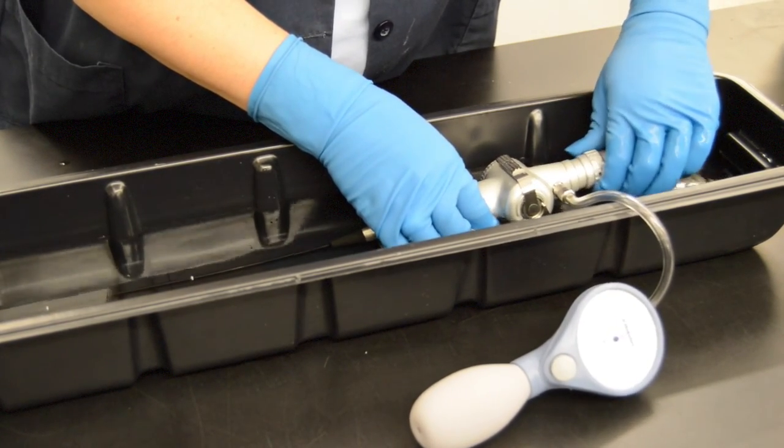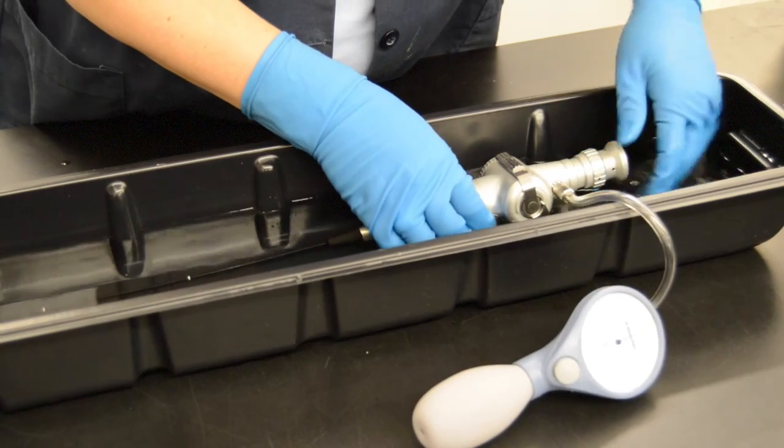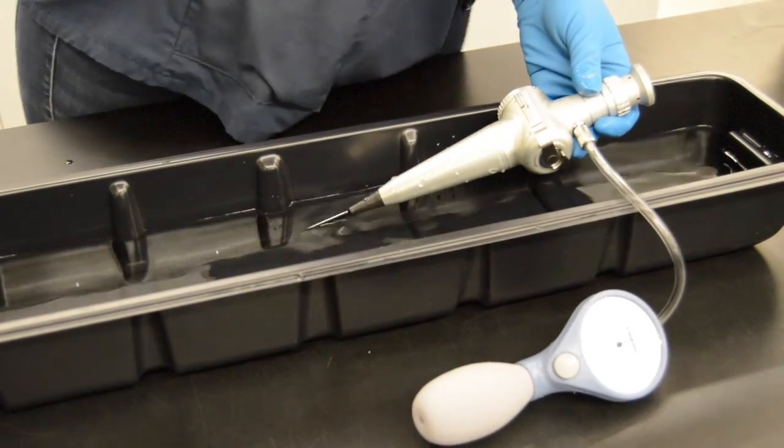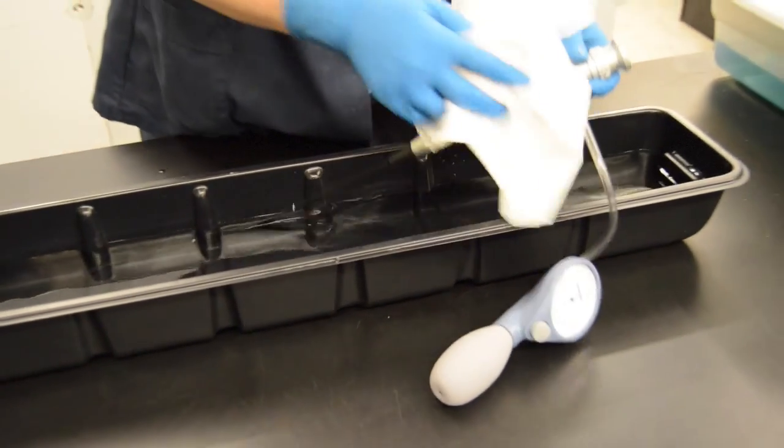Absence of a steady stream of air bubbles confirms that the endoscope is watertight. Remove the endoscope from the water and disconnect the leak tester from the endoscope.